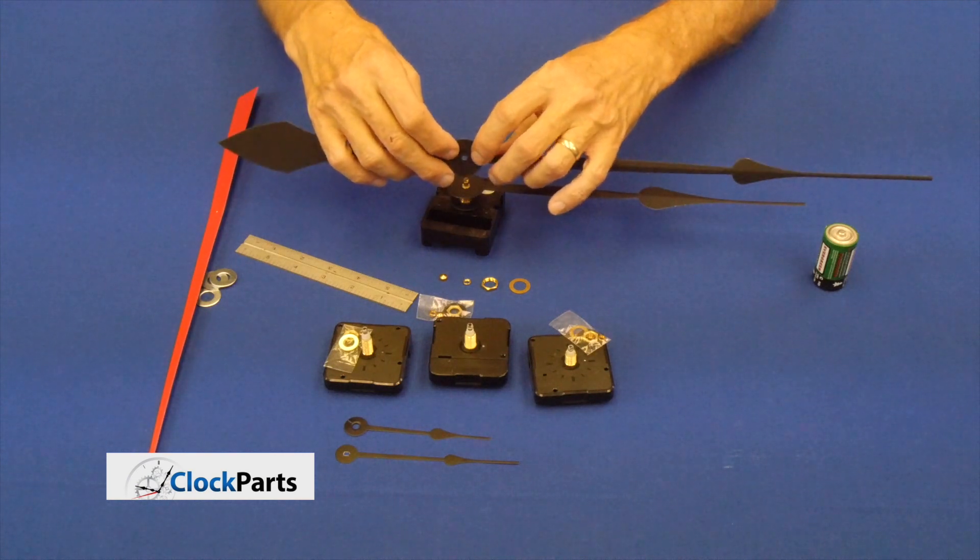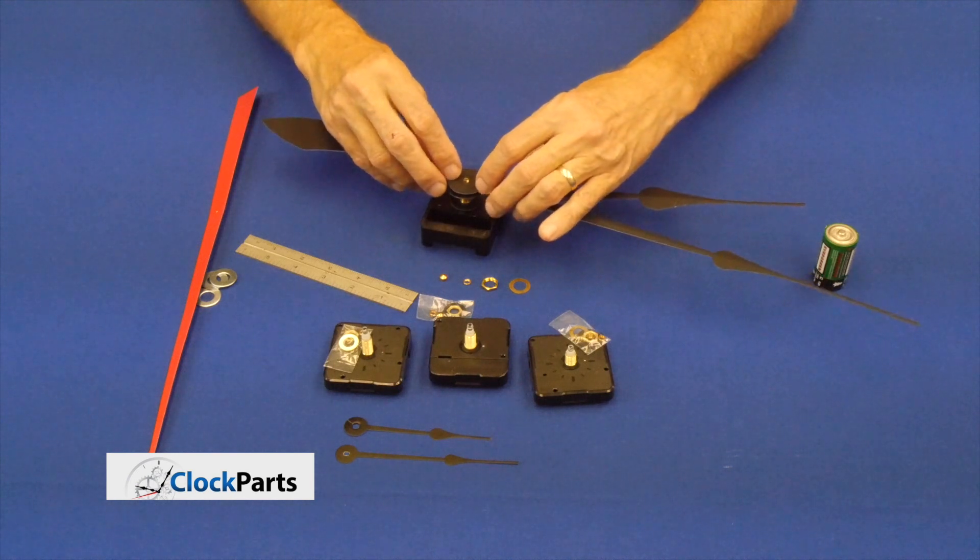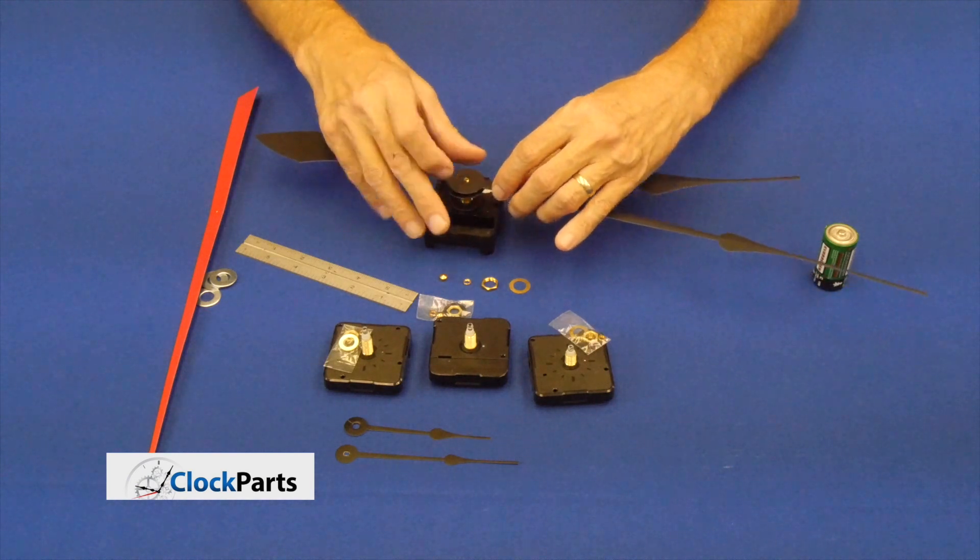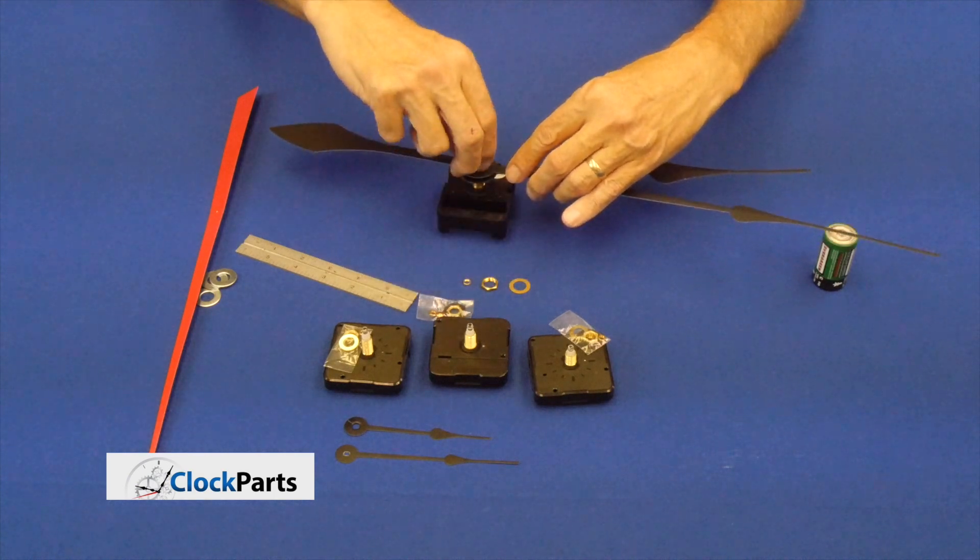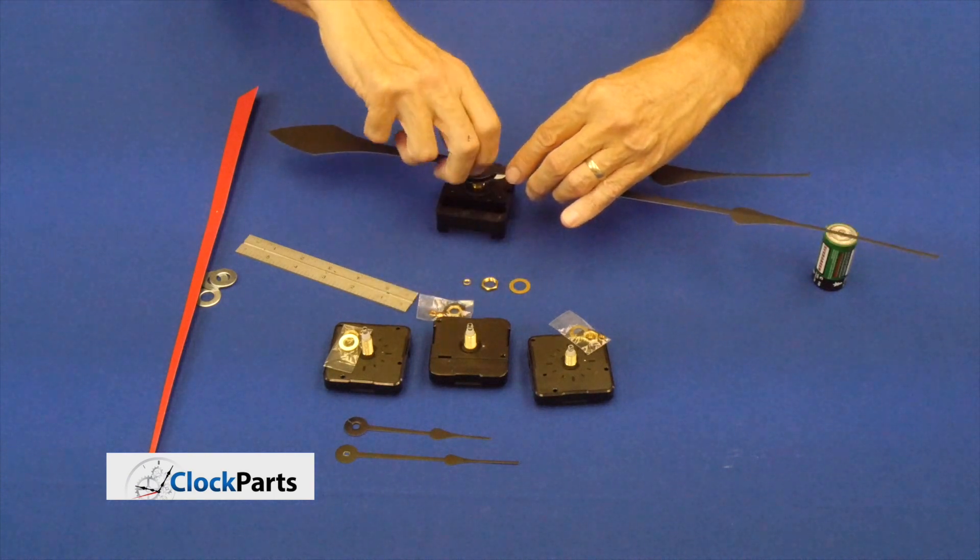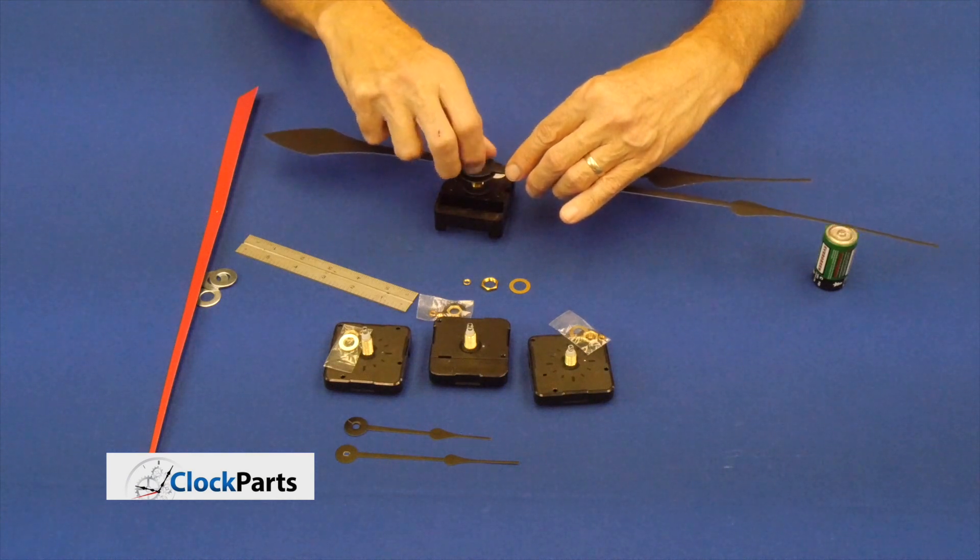As you can see, the minute hand has an oblong hole there, and it'll line up right with the shaft. And then what you do, if you're not putting a second hand, you would use the cap nut. You would just put that cap nut on and give you a real nice finish there.